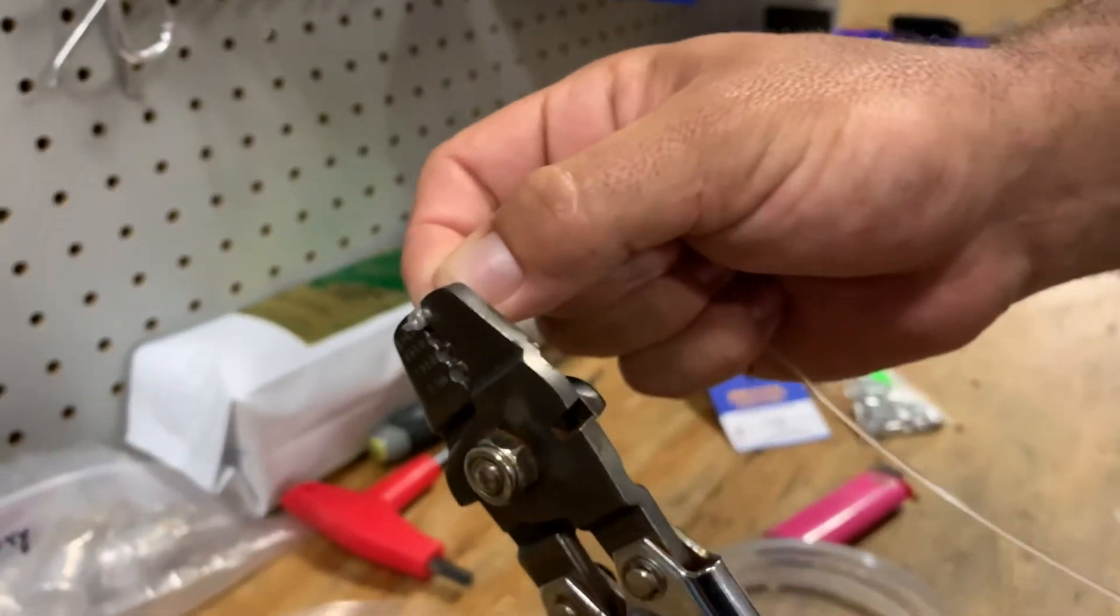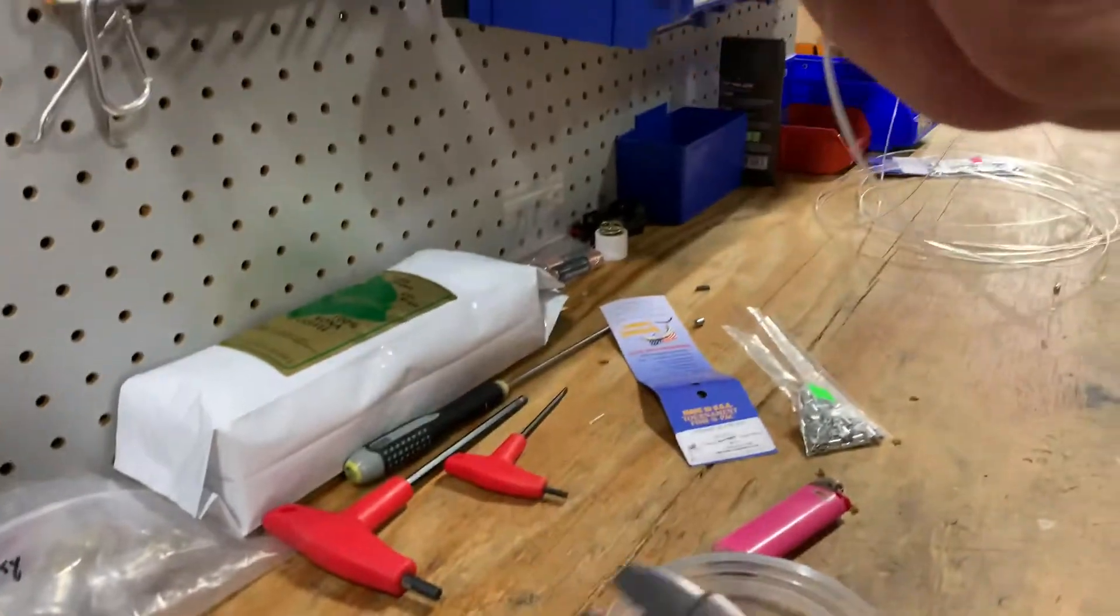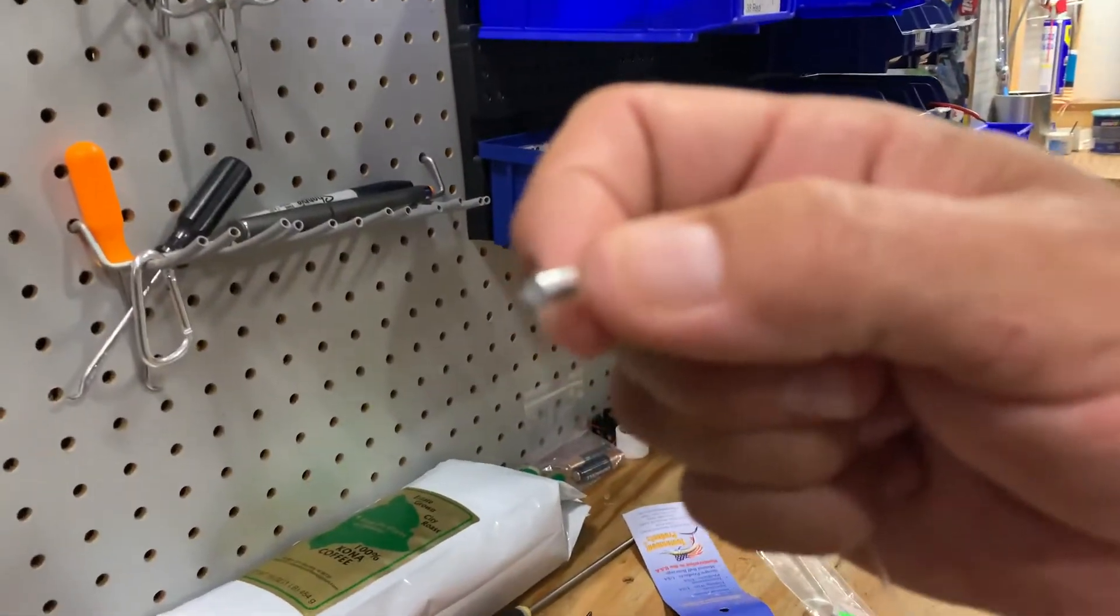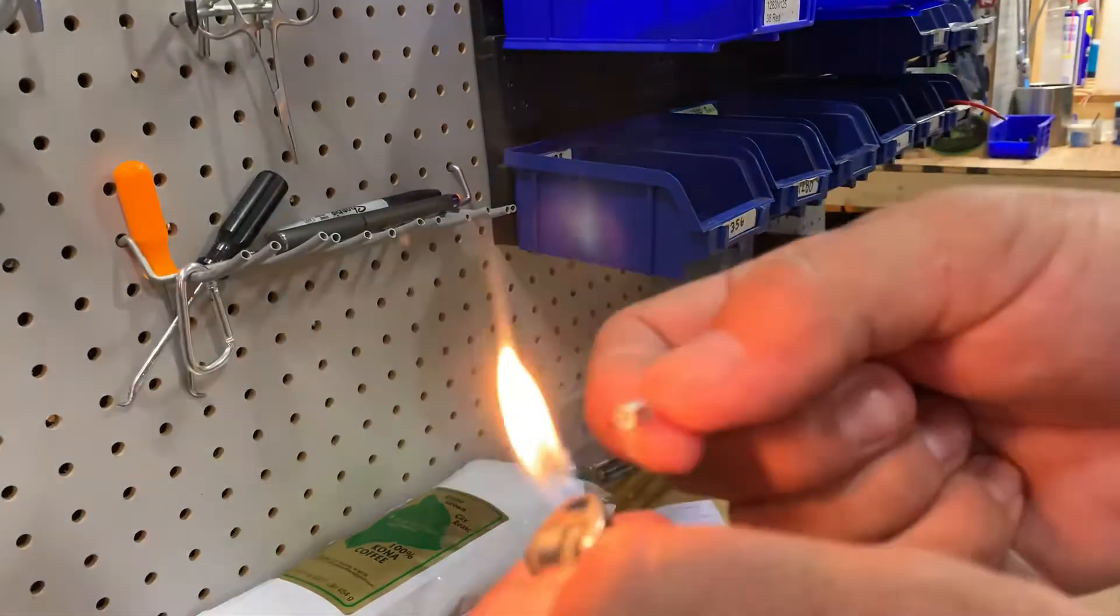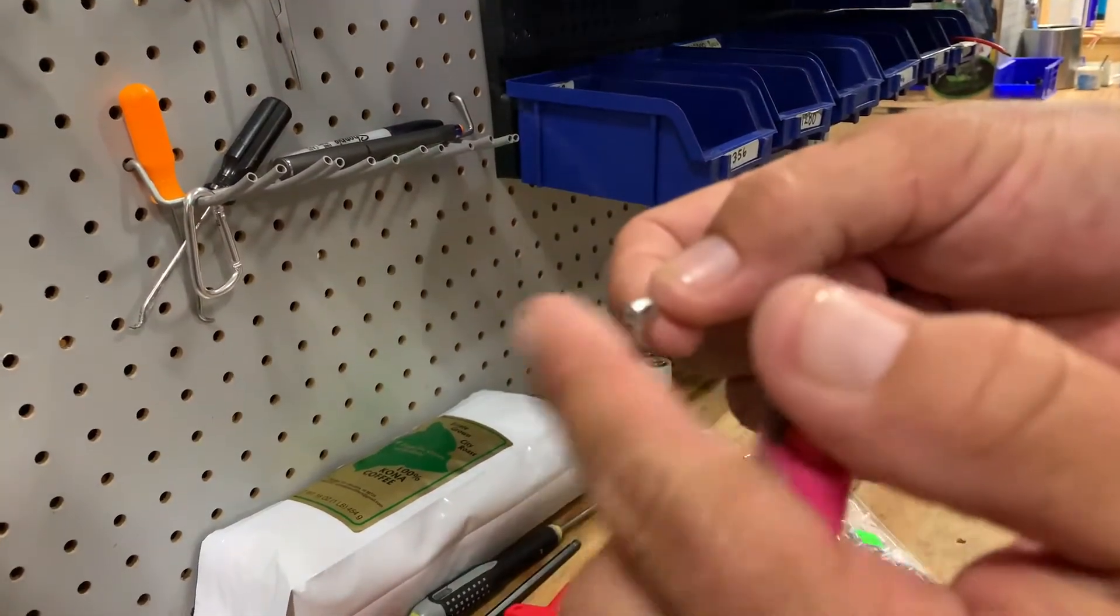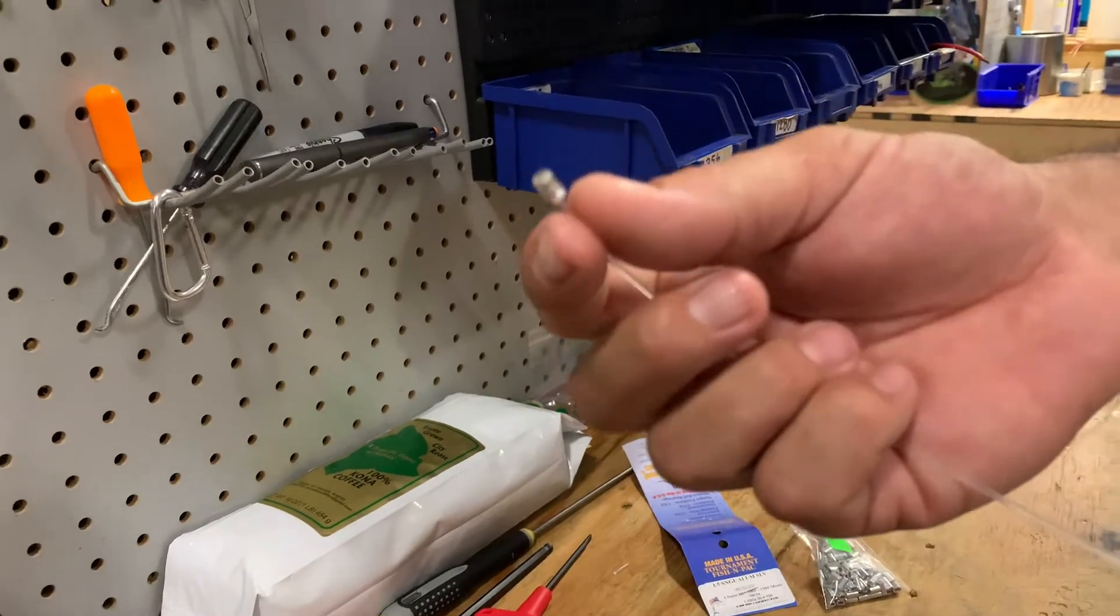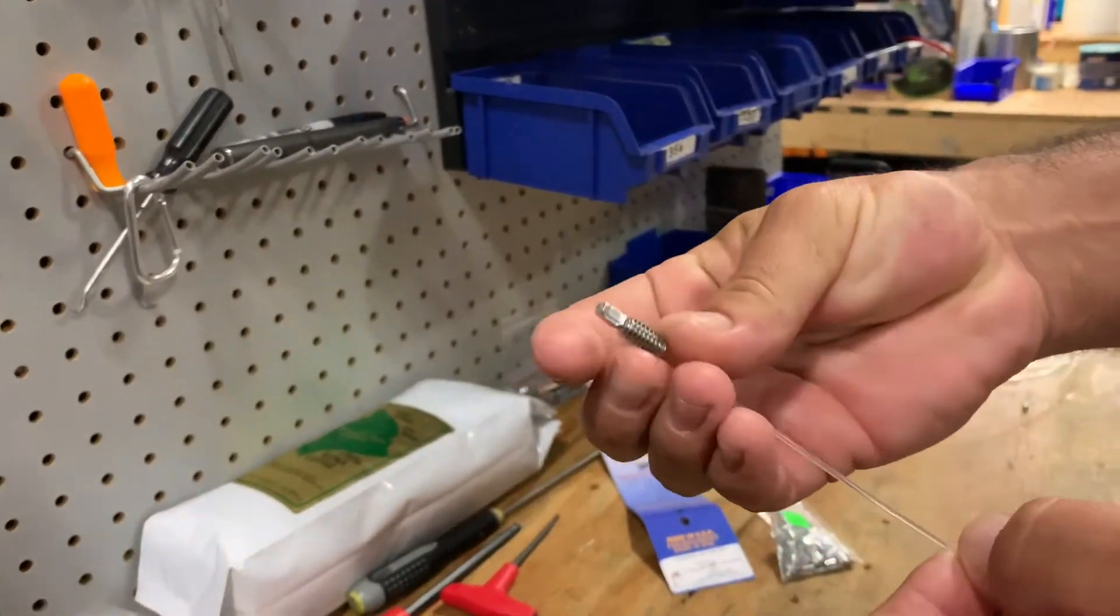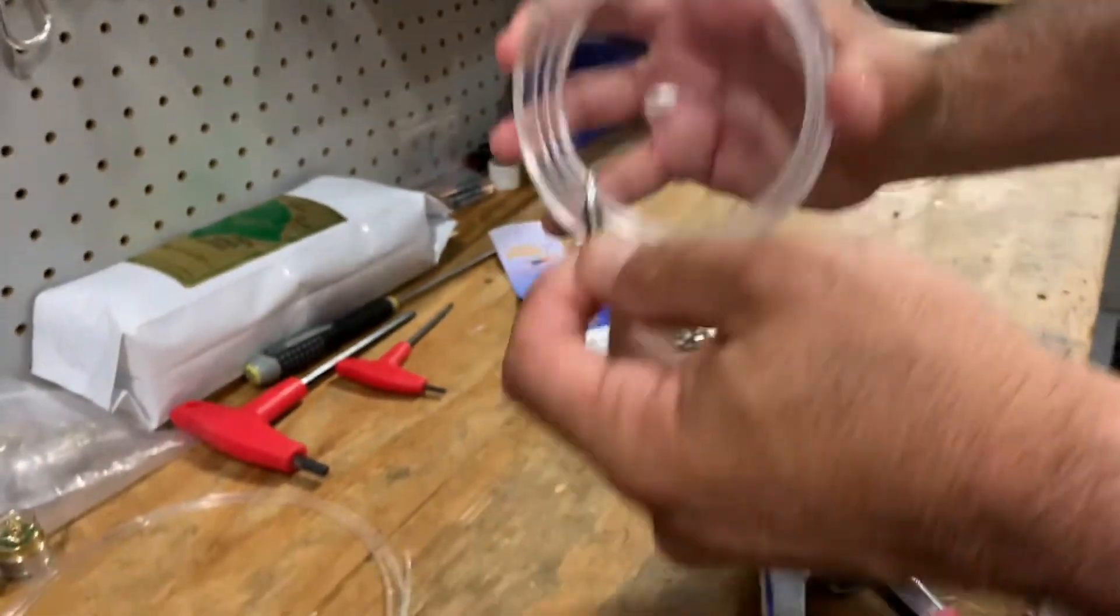Give it one more little crimp and there it's nice and tight. Take your lighter and mushroom it again real nice. Now you're ready to go. Got your piece here and we're just gonna slide that right into your camera housing.